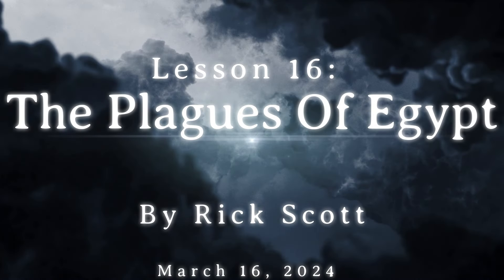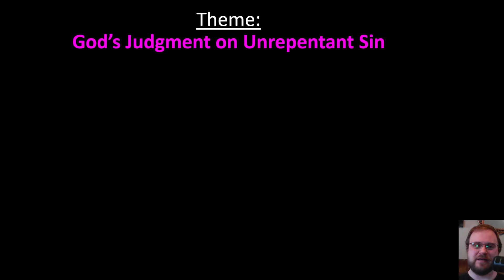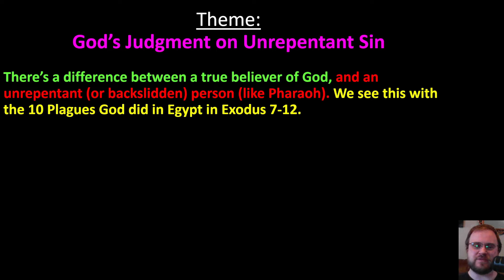All right, boys and girls, I'm very excited to be here with you today for another brand new lesson, and this one's on the plagues of Egypt and what we can learn from that. The theme of today's lesson is God's judgment on unrepentant sin. There's a difference between a true believer of God and an unrepentant or backslidden person like Pharaoh, and we see this with the 10 plagues God did in Egypt in Exodus 7-12.